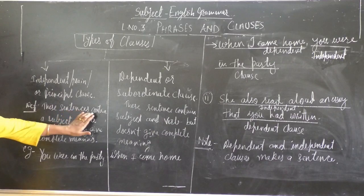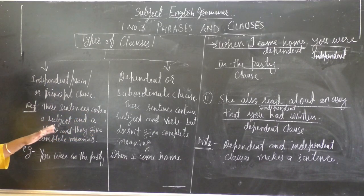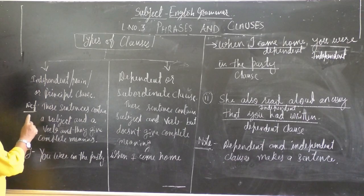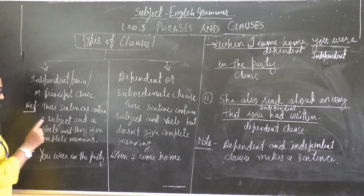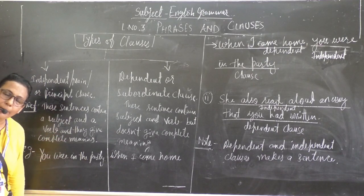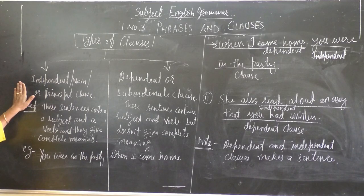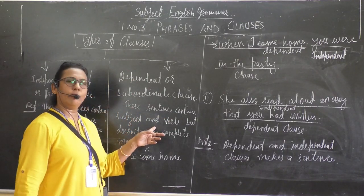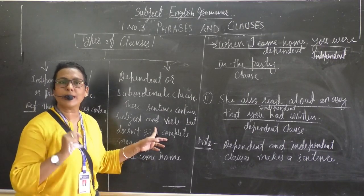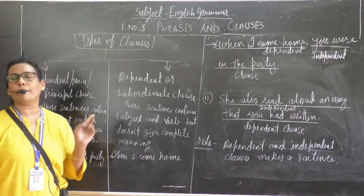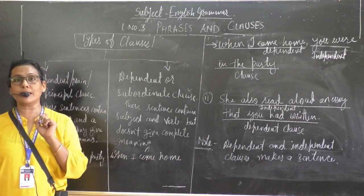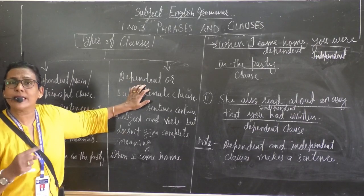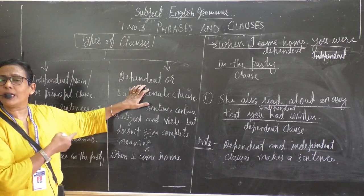In both clauses — independent clause and dependent clause — there is a subject and a verb. But these sentences in the independent clause contain a subject and a verb and they give a complete meaning. When the subject and the verb are there and it gives a complete meaning, that is called a principal clause or independent clause. The second one, dependent, also contains a subject and a verb but does not give the complete meaning.